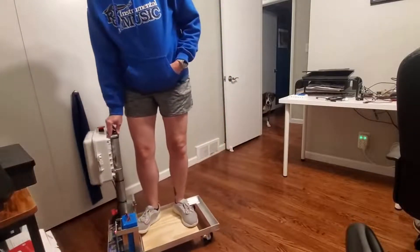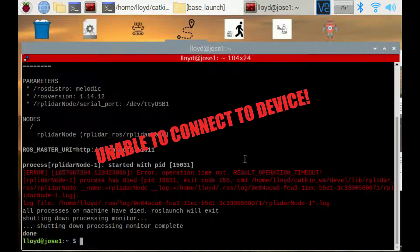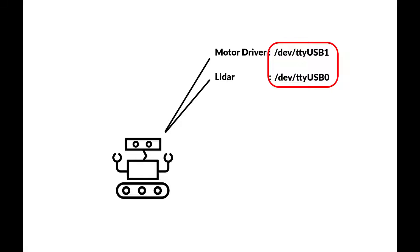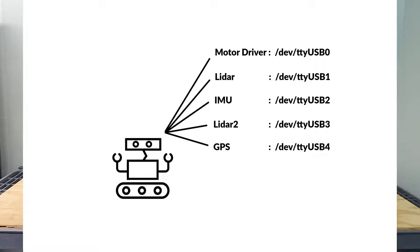And then you reboot. Now maybe your motor driver that was at USB0 is now at USB1 and your LiDAR is now at USB0. And that's just with two devices. Our robots can end up with a lot of devices, so it's important that every time we reboot the robot or plug in new devices, we don't have to change our software and parameter files and manually go look for which port number is which device every time we want to start up.